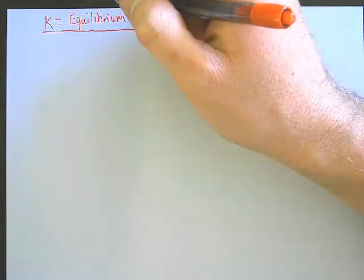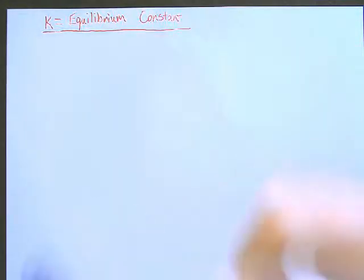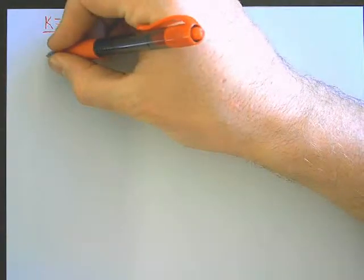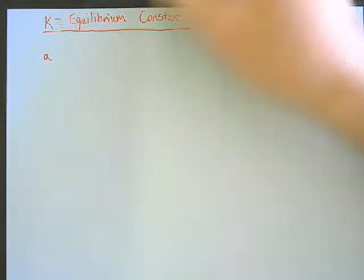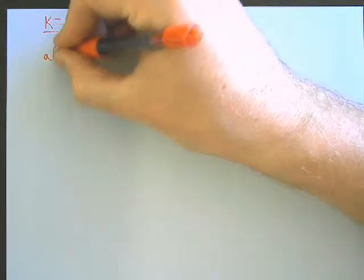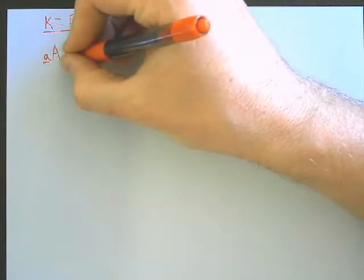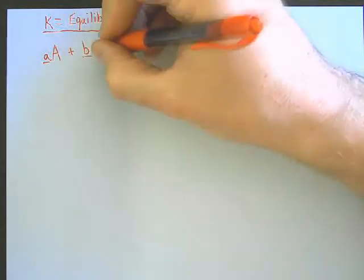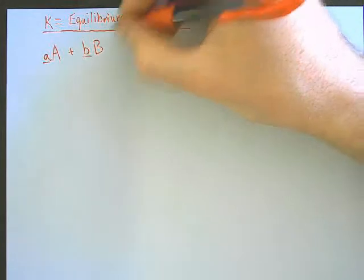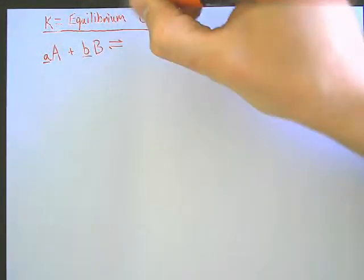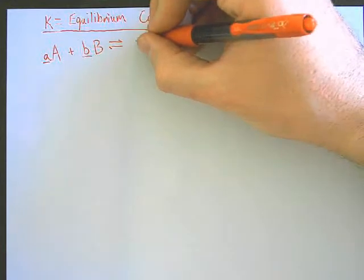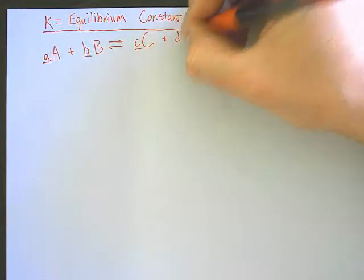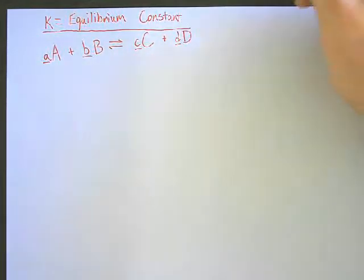Instead of the numbers for the coefficients, like if you have two H2's, I'm going to put lowercase. So let's just say I have lowercase a and uppercase A. So I have A number of whatever this is, plus B number of whatever this is, then put my equilibrium sign, goes to C number of C's, plus D number of D's.